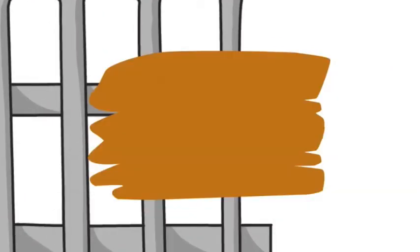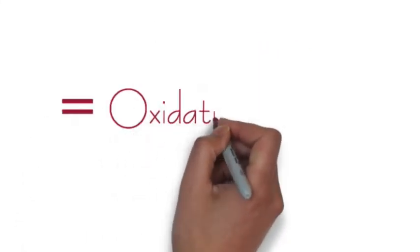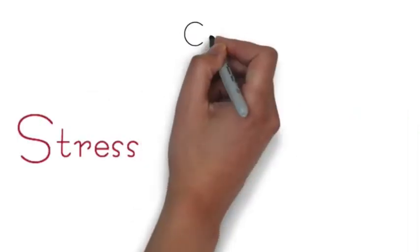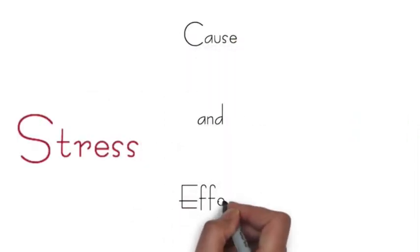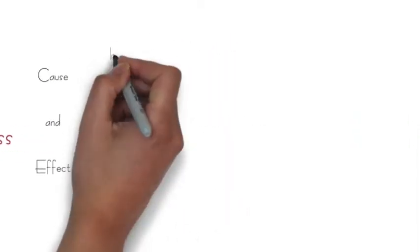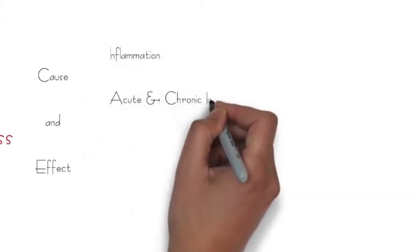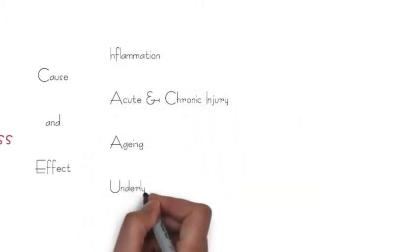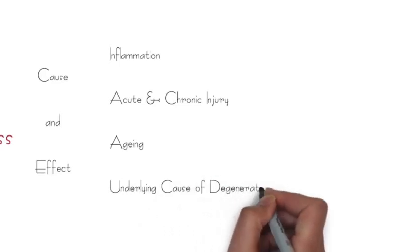Have you ever seen an apple turn brown after you cut it in half? Or a piece of metal rust? This is an example of oxidative stress, or the production of reactive oxygen species. Unresolved oxidative stress is accepted as a key component in the inflammatory phase of acute and chronic injuries, accelerates the aging process, and is the underlying trigger for most diseases and neurodegenerative conditions.